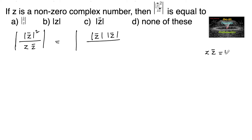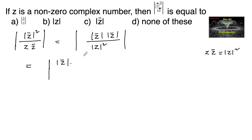Since we know that z·z̄ = |z|², this becomes the modulus of |z̄| · |z̄| upon |z|². We can write this as the modulus of |z̄| upon |z|², and since |z̄| = |z|, we get |z| upon |z|².